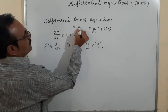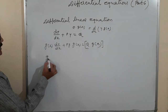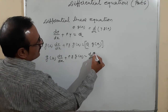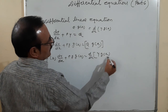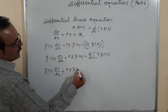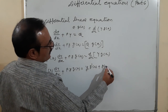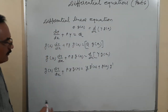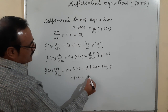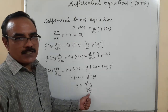So g(x) dy/dx + P·y·g(x) equals d/dx[y·g(x)]. Using the product rule, this expands to g(x)·y' + g'(x)·y. Comparing coefficients of y from both sides: P·g(x) = g'(x), therefore P = g'(x)/g(x).